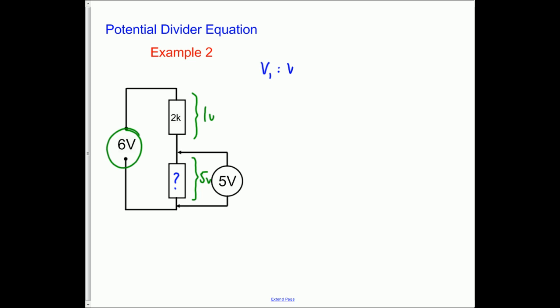So therefore the voltages V1 to V2 are in the ratio 1 to 5 and therefore the resistors R1 to R2 are also in the ratio 1 to 5. We know that R1 is 2k and therefore 2k to R2 must be in the ratio 1 to 5. It means that R2 must be 5 times bigger so R2 must therefore be 10 kilo ohms. So this resistor here becomes 10k. Job done.